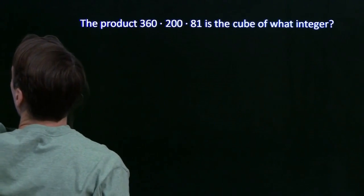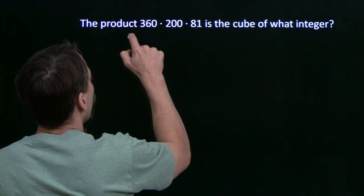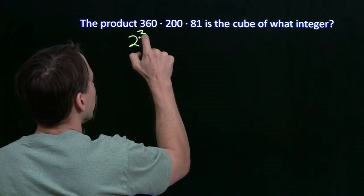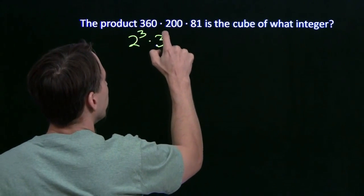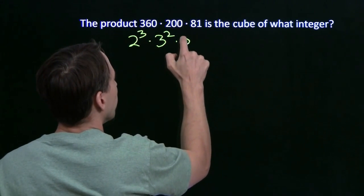We'll go ahead and write that down back here, and hope it proves to eventually be useful. That gives us 2 cubed times 3 squared times 5.